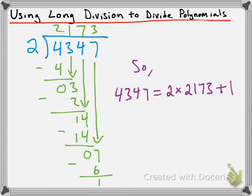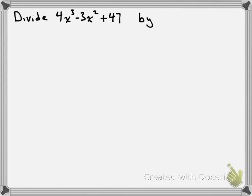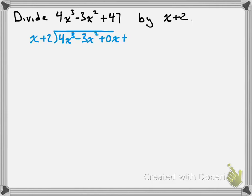We're going to repeat this process with polynomials. For example, we're going to divide 4x cubed minus 3x squared plus 47 by x plus 2. We set this division up the same way, placing x plus 2 on the outside, and underneath we have 4x cubed minus 3x squared plus 0x plus 47. I want you to take note of that plus 0x — it doesn't appear in the original polynomial, but we want every single possible exponent of x to appear in our long division. If you're skipping a term, place it in with a coefficient of 0.